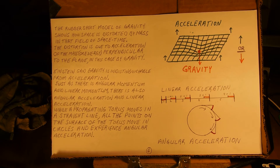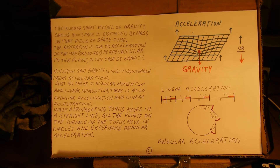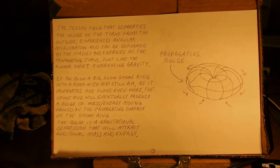The rubber sheet model of gravity shows how space is distorted by mass in that field of space-time. The distortion is due to acceleration of the mass or energy perpendicular to the plane — in this case by gravity. Einstein said gravity is indistinguishable from acceleration. Just as there is angular momentum and linear momentum, there is also angular acceleration and linear acceleration. While a propagating torus moves in a straight line, all the points on the surface move in circles and experience angular acceleration. The tension field separating the inside from the outside experiences angular acceleration and can be deformed by masses and energies, just like the rubber sheet experiencing gravity.